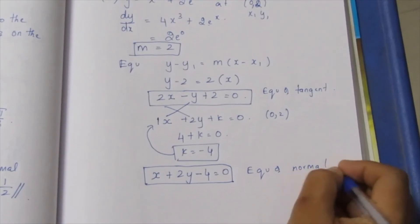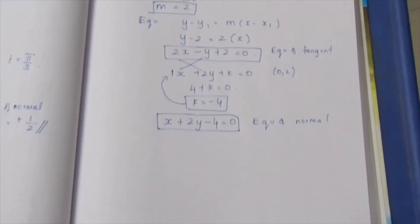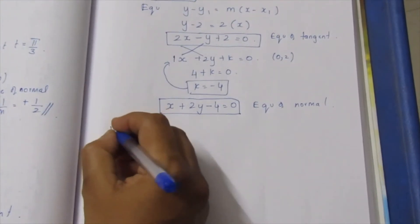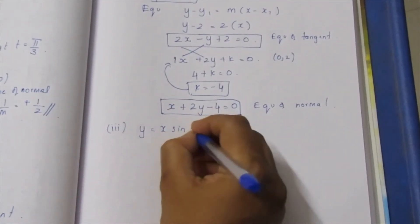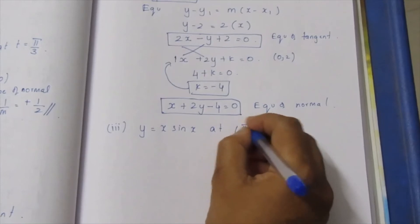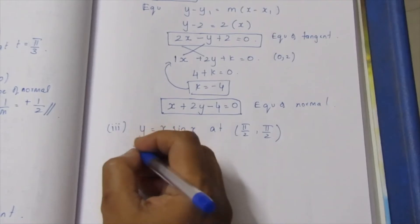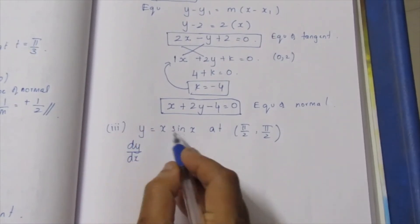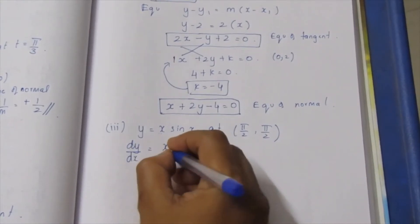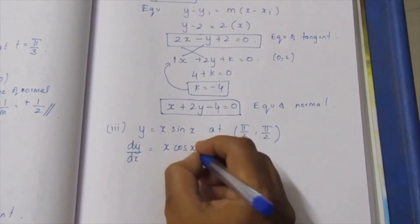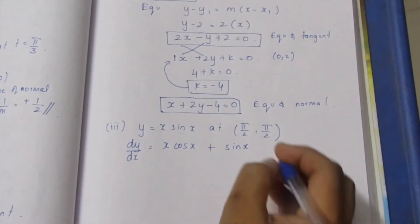This method is very easy — the slope method is straightforward, so you can follow this approach. Next, third subdivision: y equals x·sinx at point (π/2, π/2). Differentiate using the product rule: dy by dx equals x·cosx plus sinx·1.